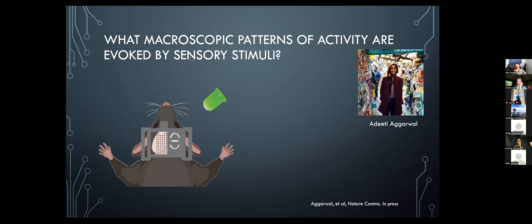So far: when we perceive a stimulus there is large-scale integration of brain activity, but it doesn't tell you what those macroscopic patterns are. There are oscillations that are correlated, but is there an overall structure to this pattern of correlations? That's the latest work by DT, done in mice.